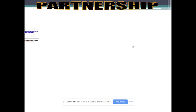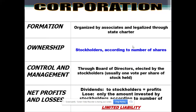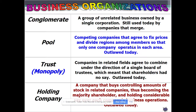A partnership is an agreement between two or more individuals with shared management and unlimited liability. A corporation is organized by associates, legalized by a state charter — you see 'INC' at the end of a company name. Ownership is by stockholders; control is by a board of directors elected by annual shareholders. Dividends go to stockholders, and it's limited liability — you only lose what you put in. A conglomerate is a group of unrelated businesses owned by a single corporation, like Mars Petco, which owns candy bars and pet supplies.